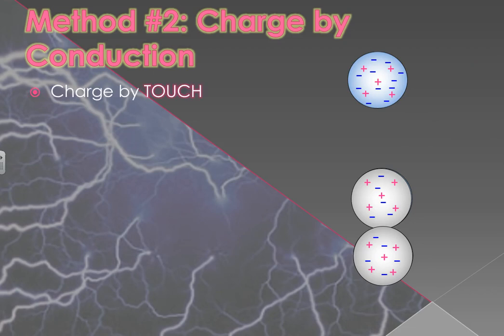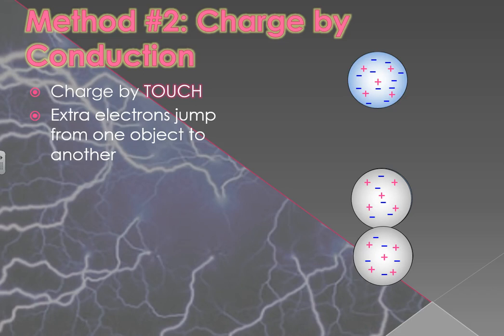Charging by conduction works by touch. Touch a charged object, and you will share its charge. Extra electrons will jump from one object to another, either because they're repelled by other negatives or because they see other positives and they're very excited to go to them.